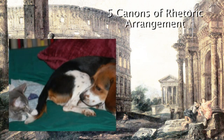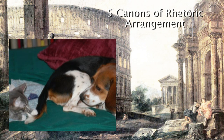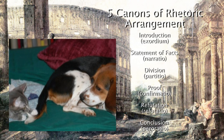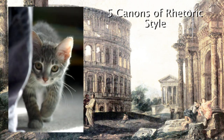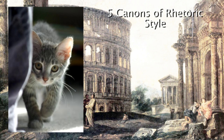Arrangement: how do you structure your argument to be the most effective? Classic rhetoricians said the proper structure was something like this: introduction, statement of facts, division, proof, refutation, and conclusion. Style: the audience will have a hard time buying your argument if you deliver the message in a form inconsistent with the subject and the audience. How do you present the message in a persuasive way?